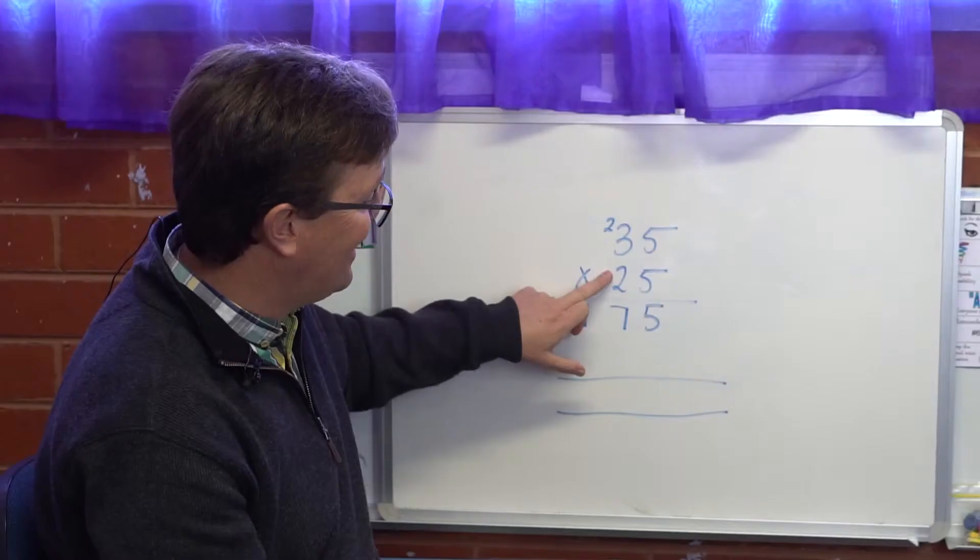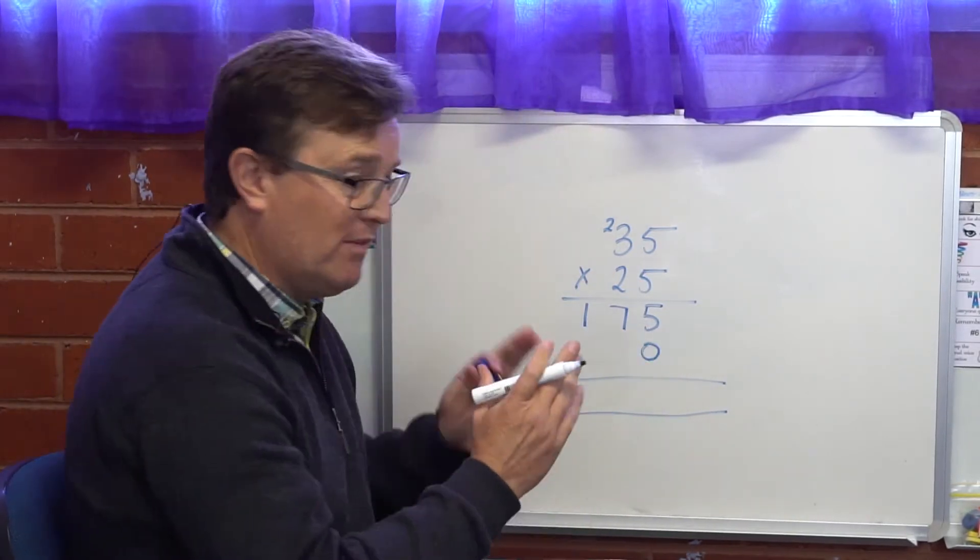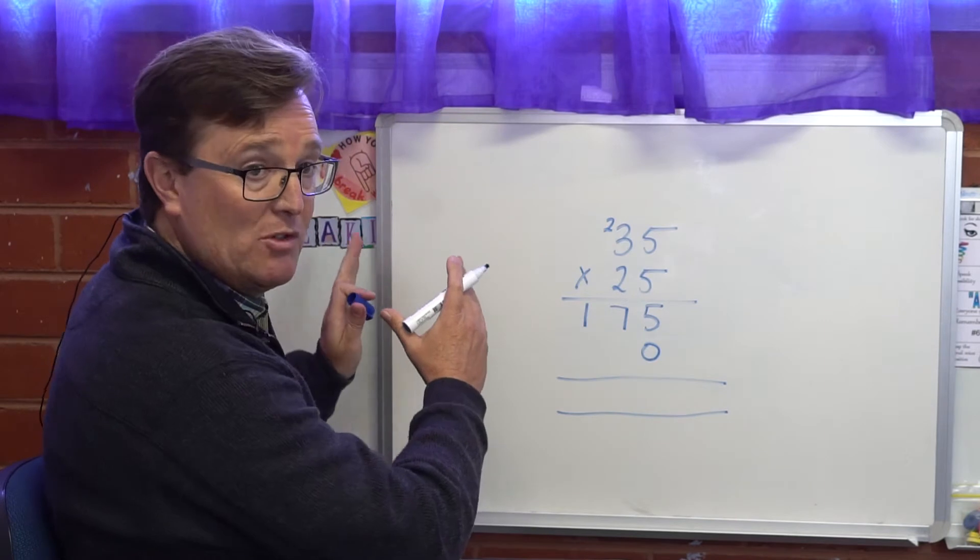Because we're multiplying by tens now, we have to put a 0 in the ones column to move every set of numbers across one, because we're multiplying by 10.